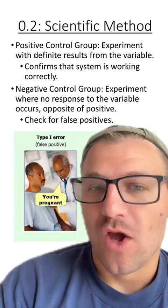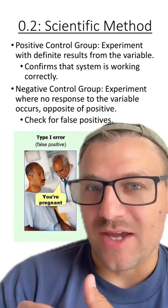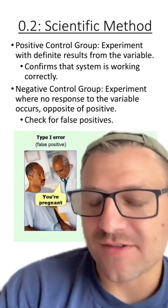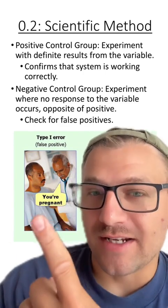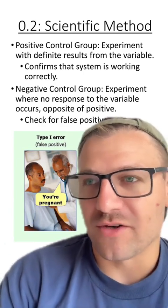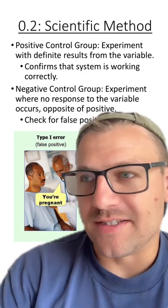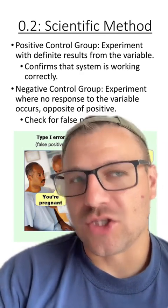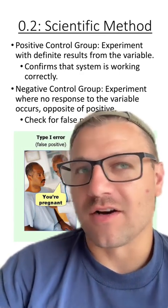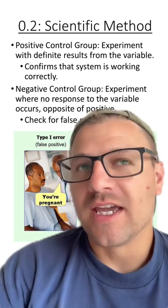In a negative control group, we know that we shouldn't see a result from the variable. This helps us check for false positives. So we know this person is not pregnant, but if the test shows that they're pregnant, we know that our devices aren't working correctly and something in our experiment needs to be fixed. Both of these are ways that we can check to make sure our data acquisition from our devices or whatever we're using is accurate.